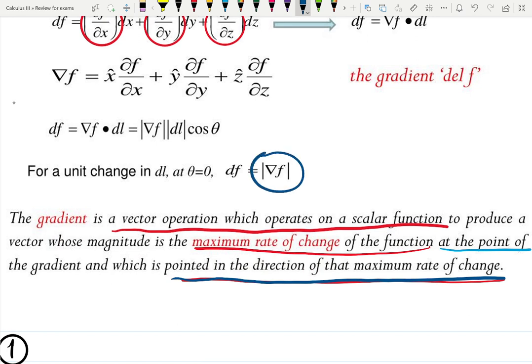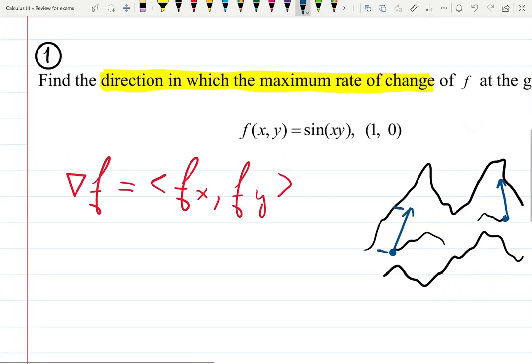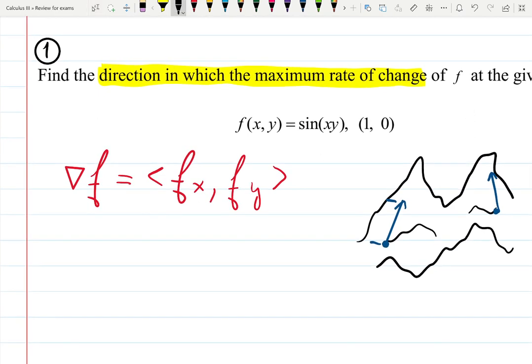And the size of that vector, the gradient, the magnitude of the gradient, will give you that maximum rate of change. So it tells you hike over there if you want the hardest hike, and this is how long your hike is going to be.